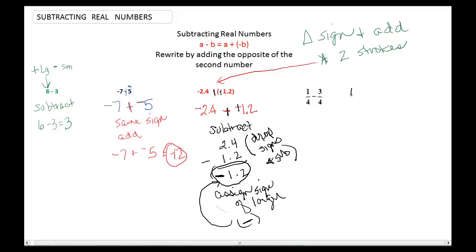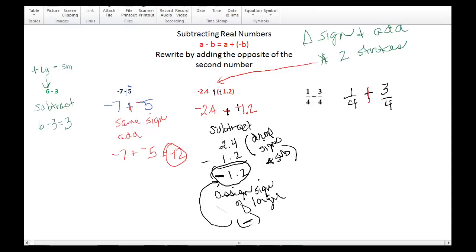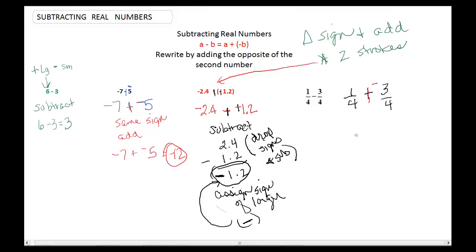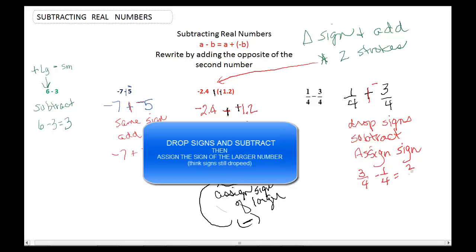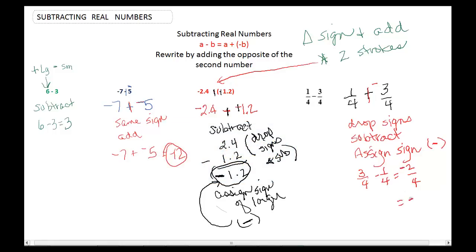Our last example: we have 1.4, and it said minus. But we're going to make our first stroke be adding. And then it said it was 3.4, but our second stroke would be to subtract. Now again, we want to drop the signs and subtract, and assign the sign of the larger. So it's really 3.4 minus 1.4 is equal to 2.4. 3 minus 1 is 2, and the sign is a negative because 3.4 is larger. And then of course we have to reduce it, so it's a negative 1 half.